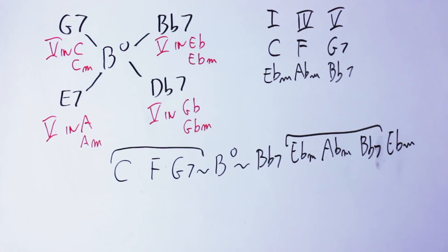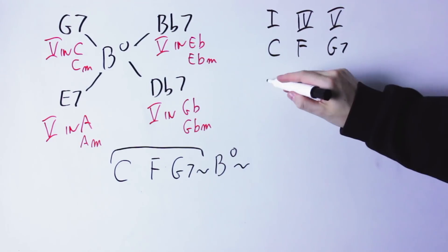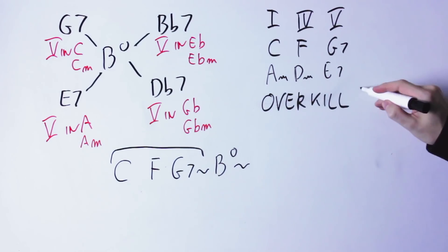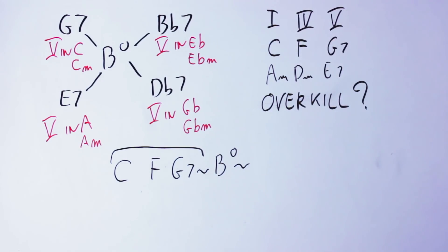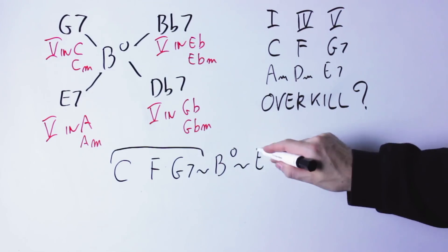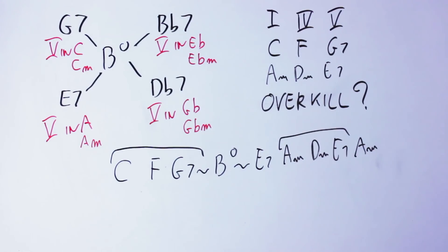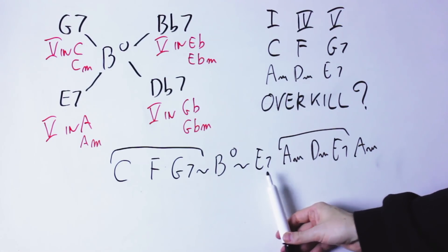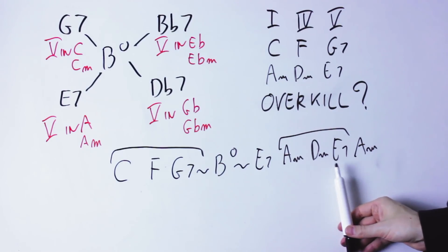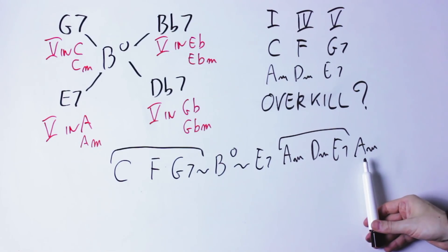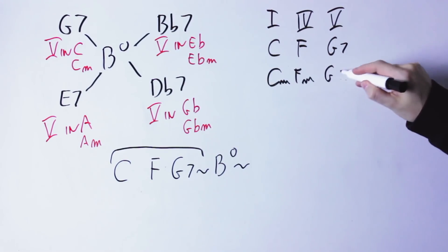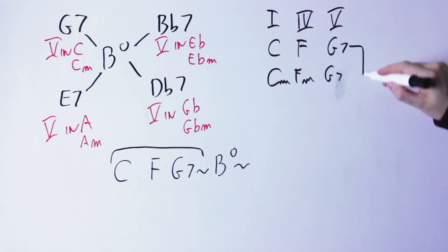I can of course use this trick to connect C major with the A minor key, but this is overkill because the keys of C major and A minor contain the same notes, so a change of key between them can actually be much easier. But still, if I go through all those steps — C, F, G7, B diminished, E7, Am, Dm, E7, Am — it works perfectly well anyway. And of course I can also connect C major and C minor this way, but again this is overkill because both keys contain the G7 chord, so I don't need to move through the B diminished to change between those keys.